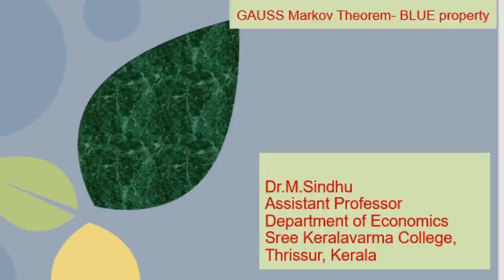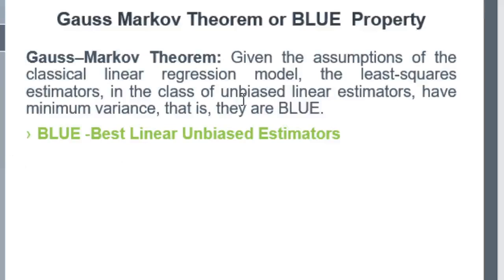In this section we will discuss another important property of the OLS estimators — the BLUE property, also known as the Gauss-Markov theorem. The Gauss-Markov theorem states that given the assumptions of the classical linear regression model, the least square estimators in the class of unbiased linear estimators have minimum variance — that is, they are BLUE.